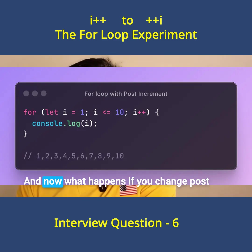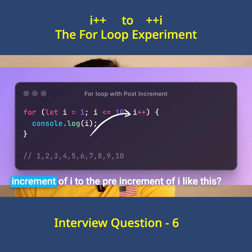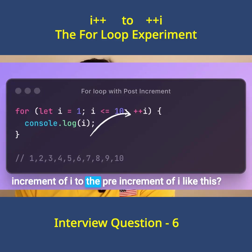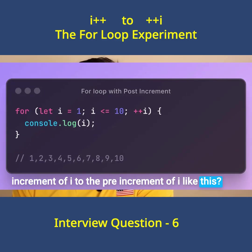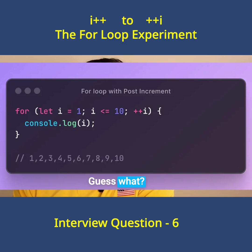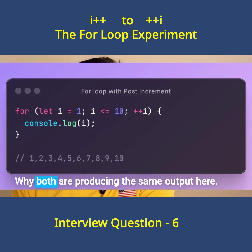And now, what happens if you change the post-increment of i to the pre-increment of i — like this. Now guess what? Actually the output is the same. Why are both producing the same output?